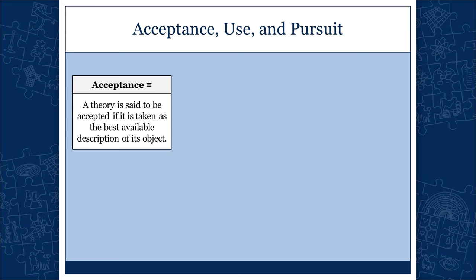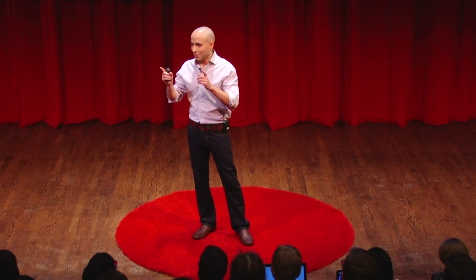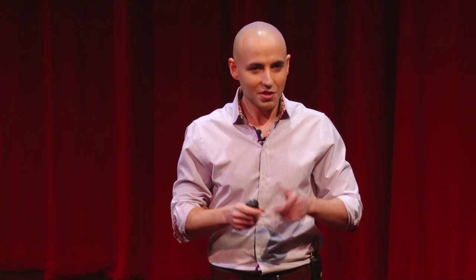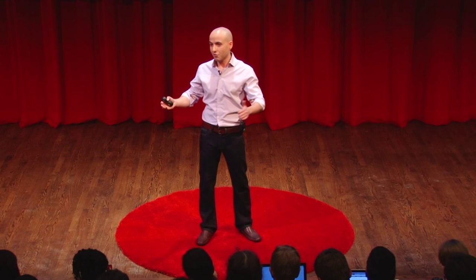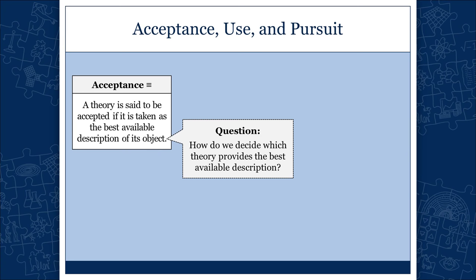Acceptance is something very special, because you cannot accept two incompatible theories at the same time. You can use them at the same time. You can pursue different incompatible theories at the same time. But when it comes to acceptance, you have to choose. You can't believe that the Earth is both flat and spherical — it's impossible. So the question is: how do we decide which theory is the best available description of its object?